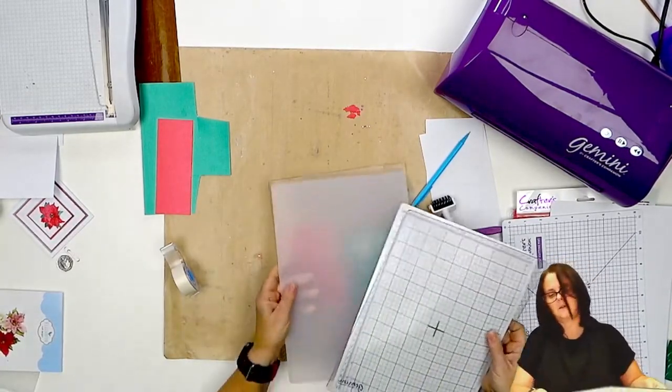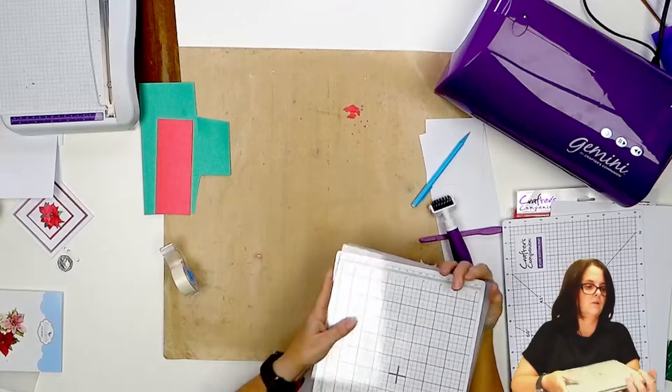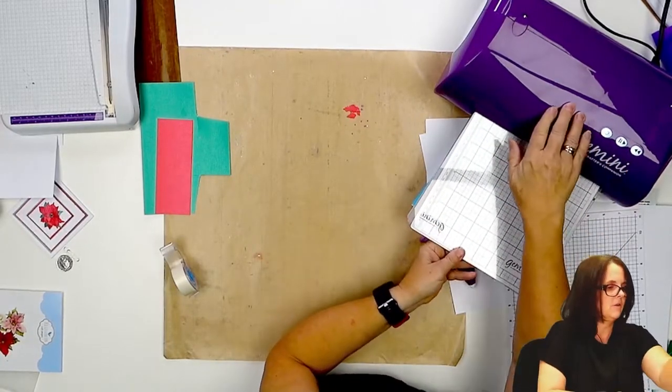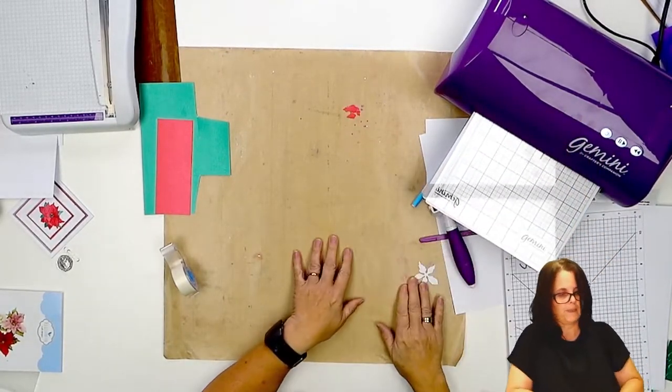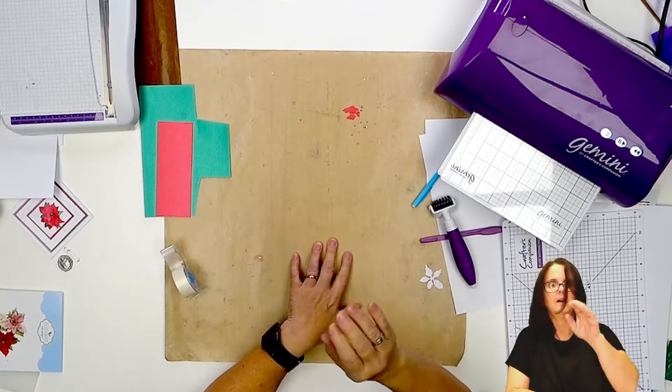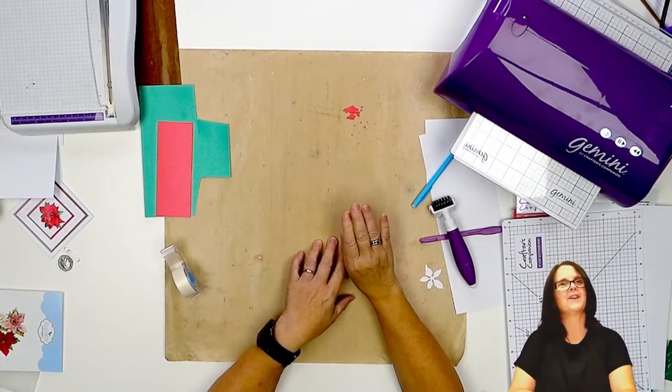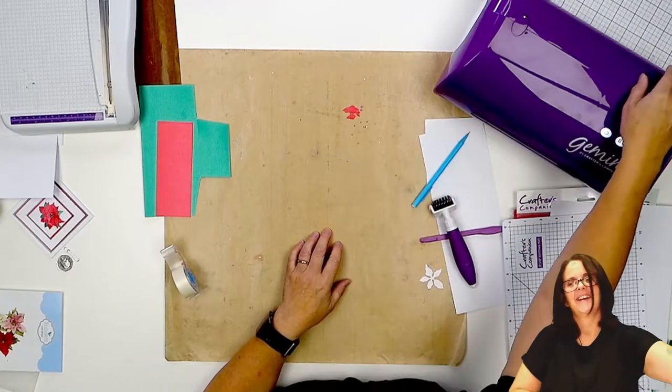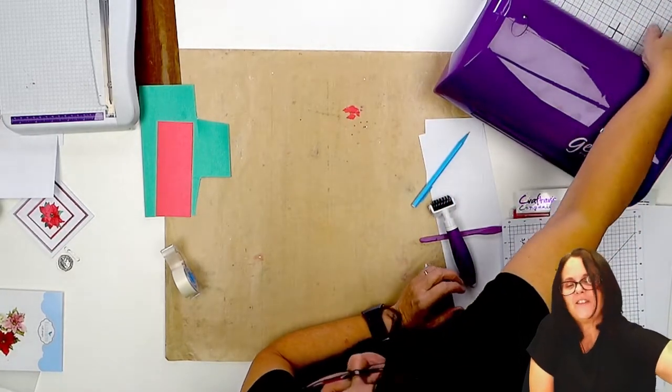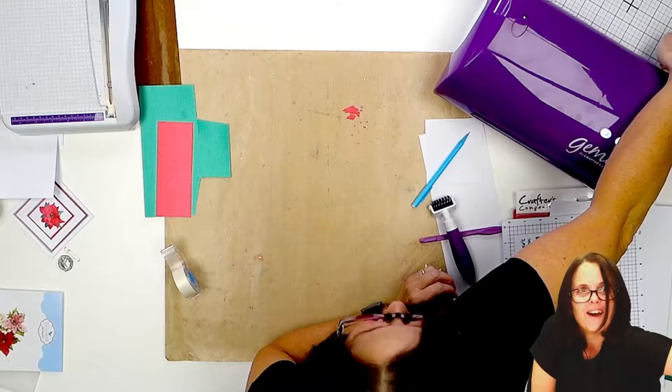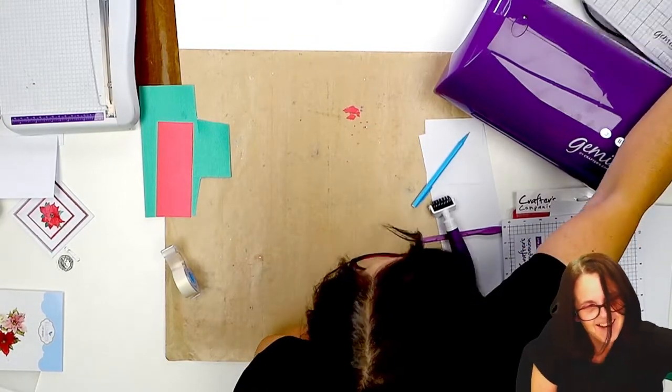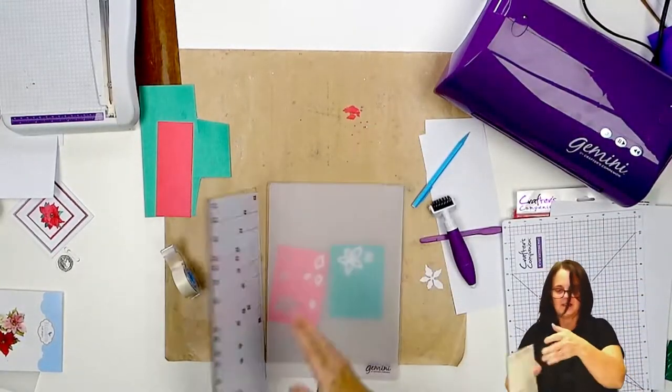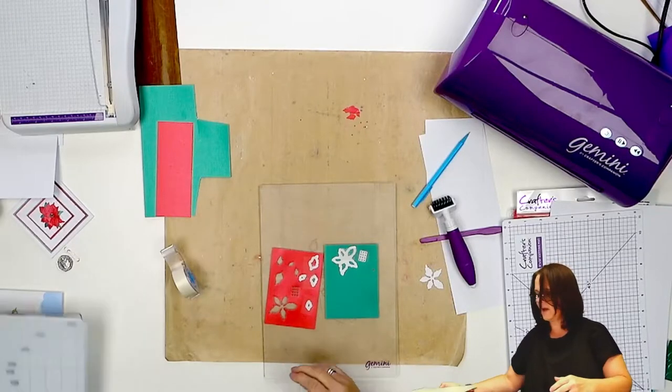So we've got these cards. Again, base plates, shim, magnetic plate and top plates. Through the Gemini. Oh this is definitely a workout for me leaning over. There we go.